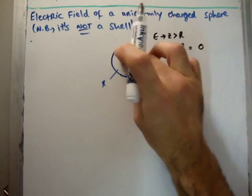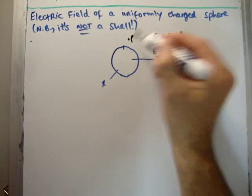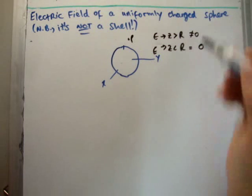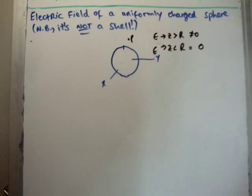But if we put P outside the shell, the electric field was non-zero. So the point is that you cannot have an electric field inside a uniformly charged spherical shell, conducting spherical shell.